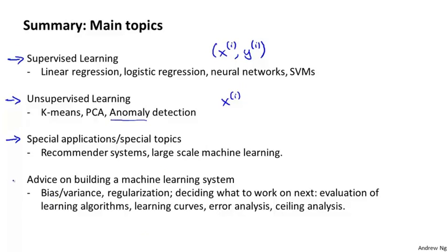And finally, we also spent a lot of time talking about different aspects of advice on building a machine learning system. And this involved both trying to understand what is it that makes a machine learning algorithm work or not work? So we talked about things like bias-variance.